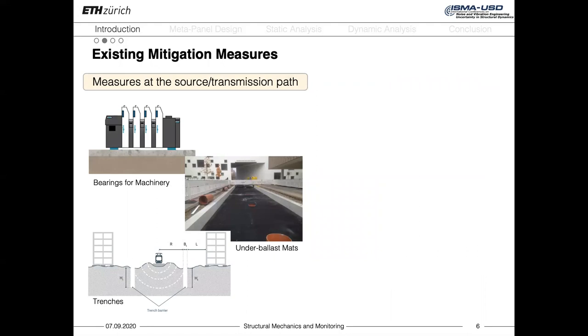In order to reduce the impact of ground vibrations, several practical mitigation solutions have already been developed. Some of them act directly on the source of excitation, such as elastomeric bearings for industrial machinery, or under-ballast mats for trains, which have the aim of decoupling the source of vibrations from the underlying soil.